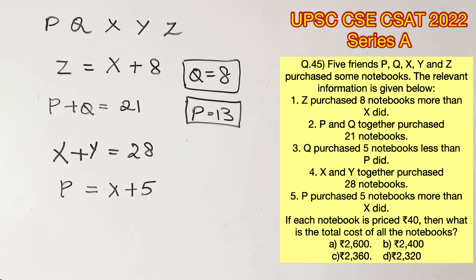Now we already know the value of P. So let's substitute the value of P as 13. So X will become 13 minus 5, which means X is equal to 8.